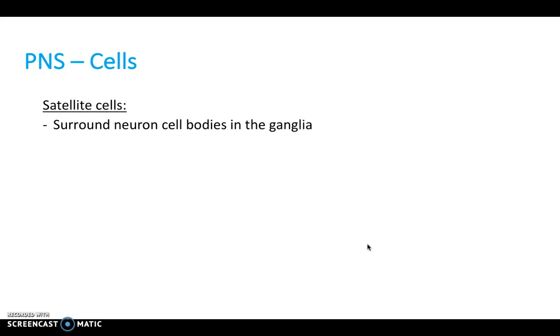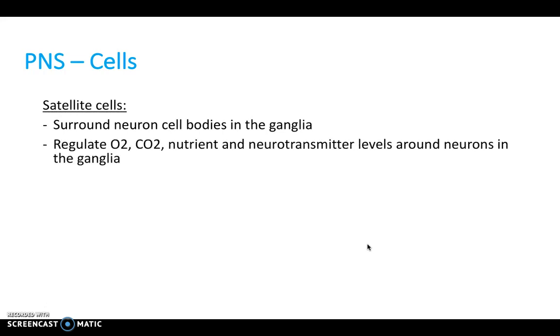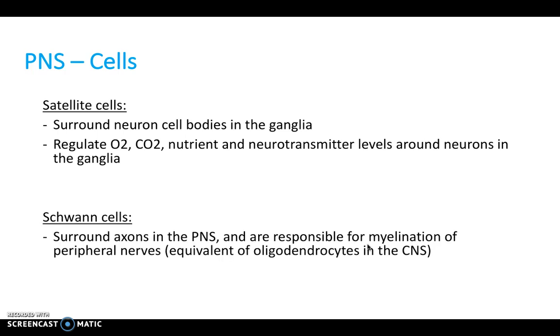In terms of cells of the peripheral nervous system, satellite cells surround the neuron cell bodies and regulate oxygen, CO2, and nutrients. Schwann cells do the same job as oligodendrocytes in the central nervous system. They myelinate the axons within the peripheral nervous system and participate in repair processes after injury.